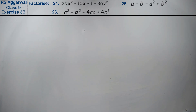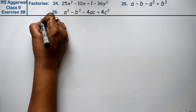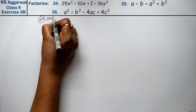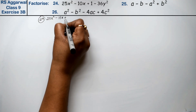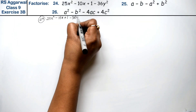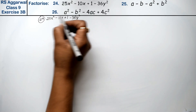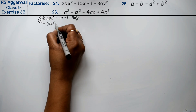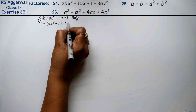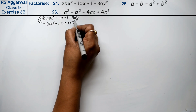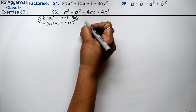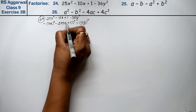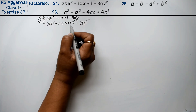Let's do question number 24 of exercise 3b on factorization of polynomials. Question 24 is: 25x² minus 10x plus 1 minus 36y². Now, we know that this whole part is (5x)², and this involves 2 into 5x, and then 36y² is (6y)². So this can be matched to a formula.